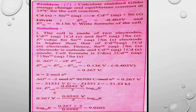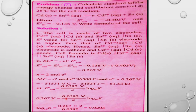For the equilibrium constant K: E°_cell = (0.0592 / n) × log K. Substituting: 0.267 = (0.0592 / 2) × log K. Solving: log K = (0.267 × 2) / 0.0592 = 9.0203. Therefore K = 10^9.0203. That completes all the electrochemistry numericals.